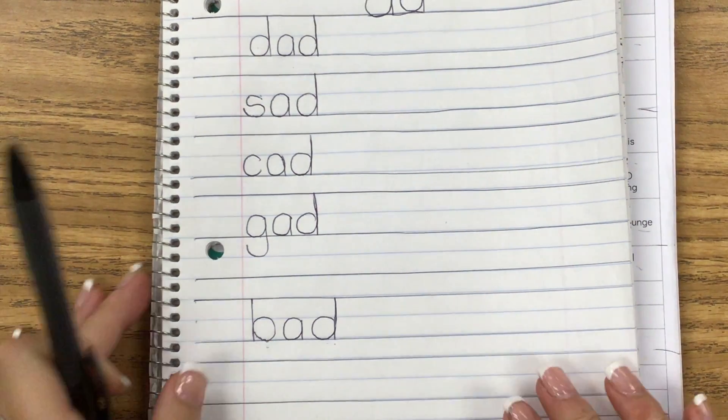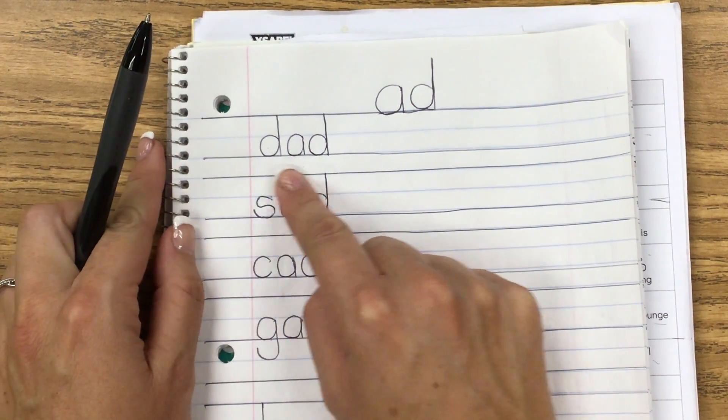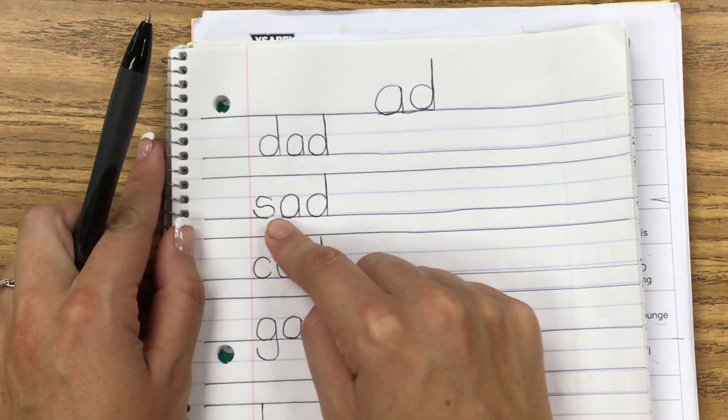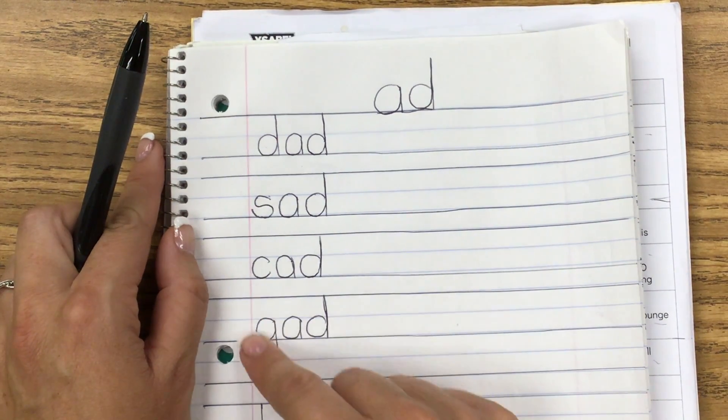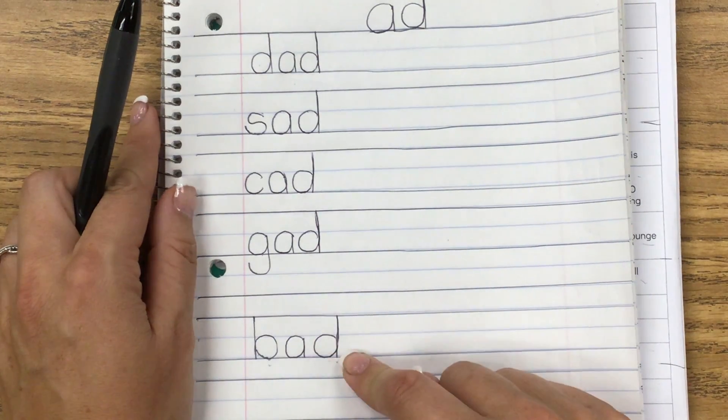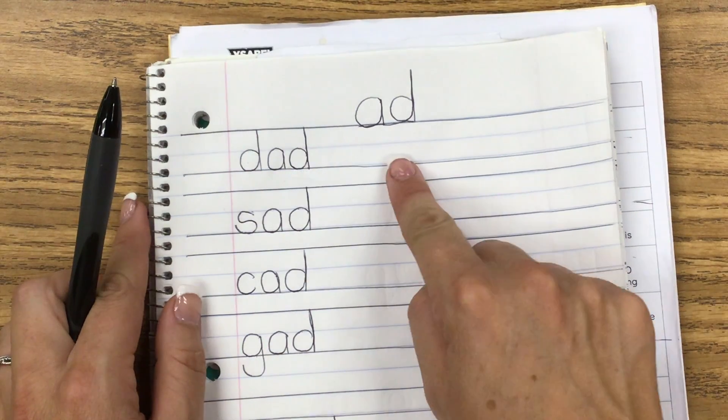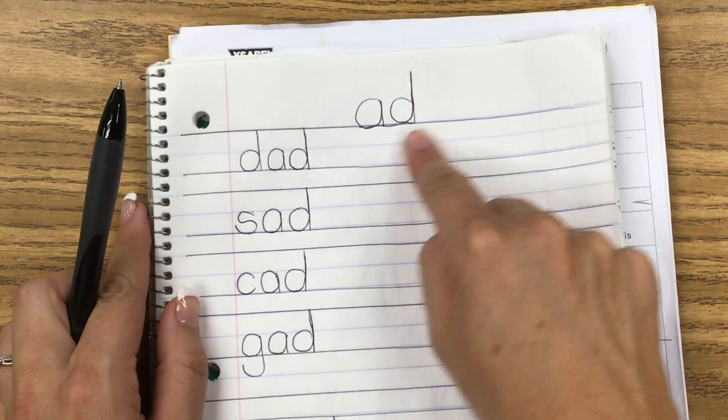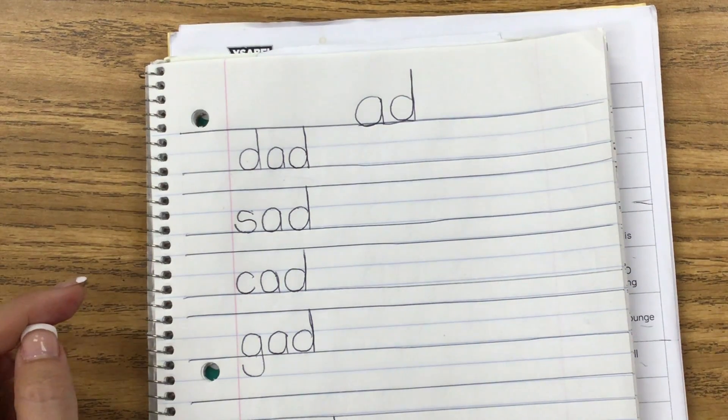Let's get our pointer finger and we are going to read all of these words. Please read them with me. DAD. SAD. CAD. GAD. And BAD. And all of these words rhyme because rhyming words have the same ending and they all have the AD ending. Nice job today friends. See you next time. Bye.